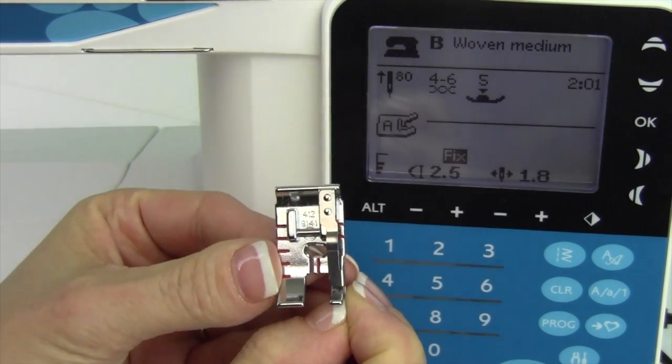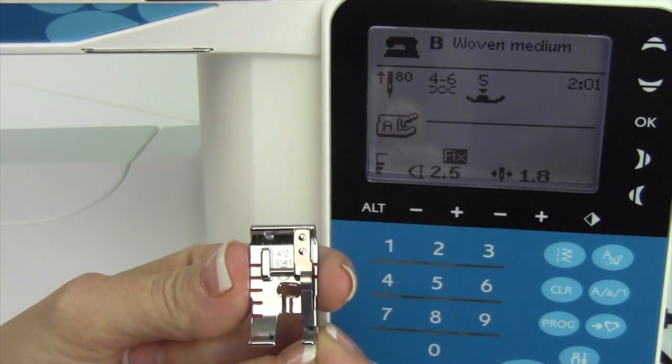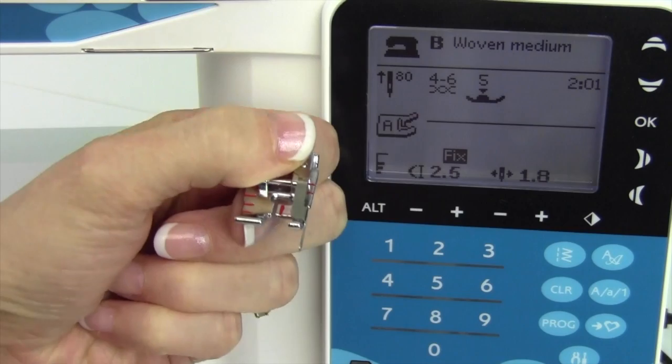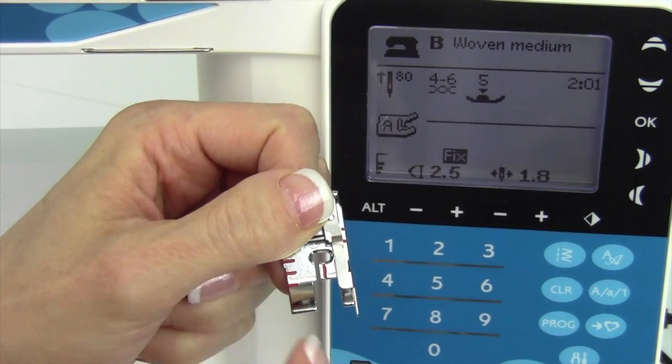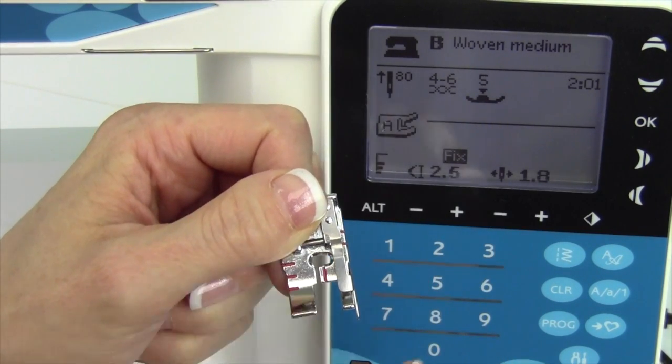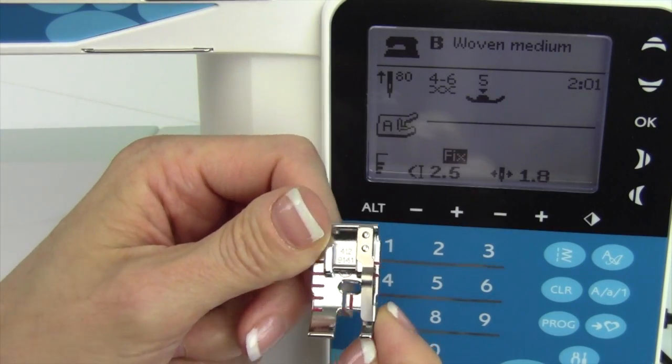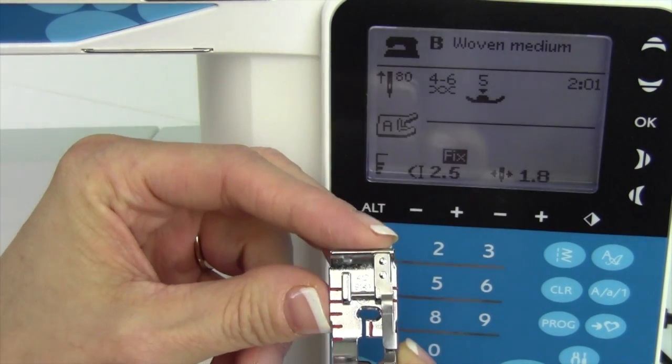This foot is kind of an A foot, but it has a guide and a line shifted over to the right side. That red line will be lined up with the needle, making it so you have perfect quarter inch seams.